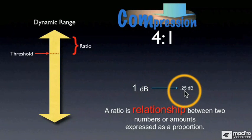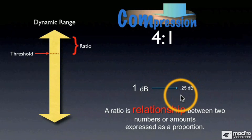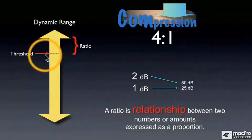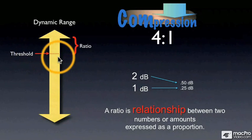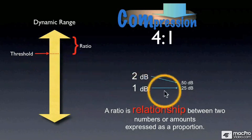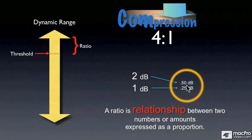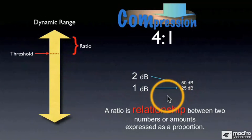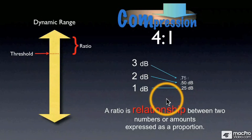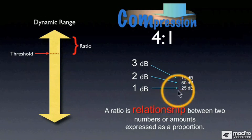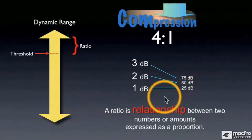Four to one. If you have a signal that's two dB above the threshold, with a ratio of four to one, that will be outputted as a half a dB. Three dB becomes three quarters of a dB.